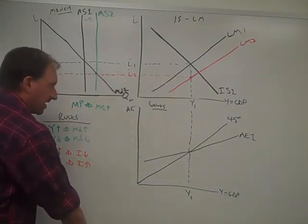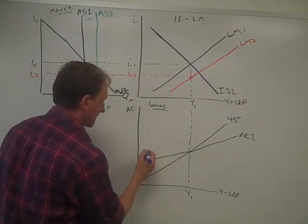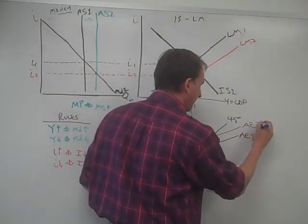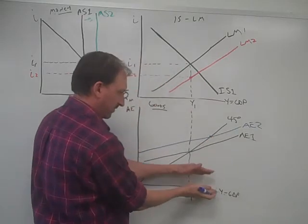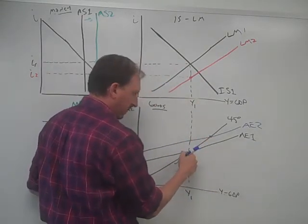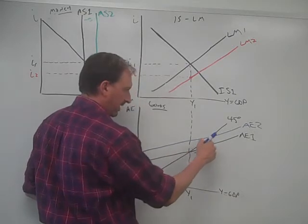And when investment increases, then AE increases. So let's go ahead and increase AE. So AE goes from AE1 to AE2, right? Investment gets bigger. So the whole stack gets bigger. That pushes AE up. And we move this point of intersection with the 45-degree line from there to there.